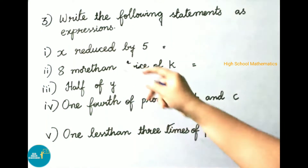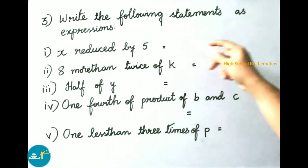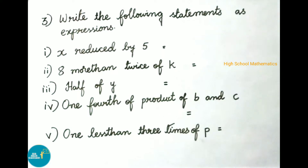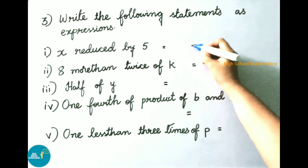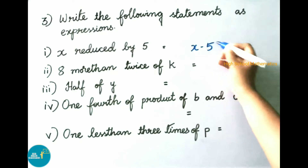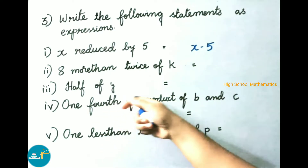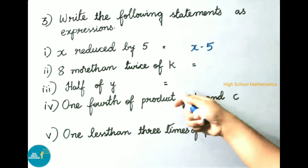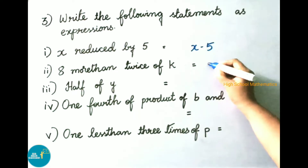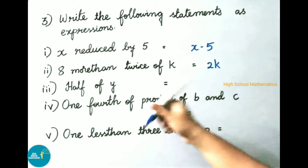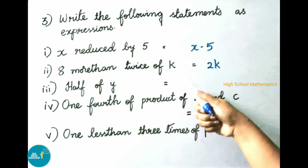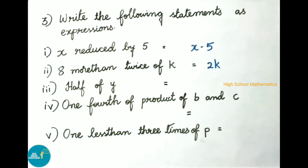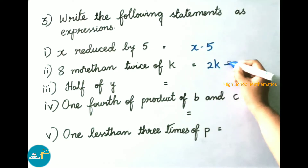Question three: write the following statements as expressions. First, 'x reduced by 5' — reduce means subtraction, so the answer is x minus 5. Second, 'eight more than twice of k' — twice of k is 2k, more than means plus, so the answer is 2k plus 8.